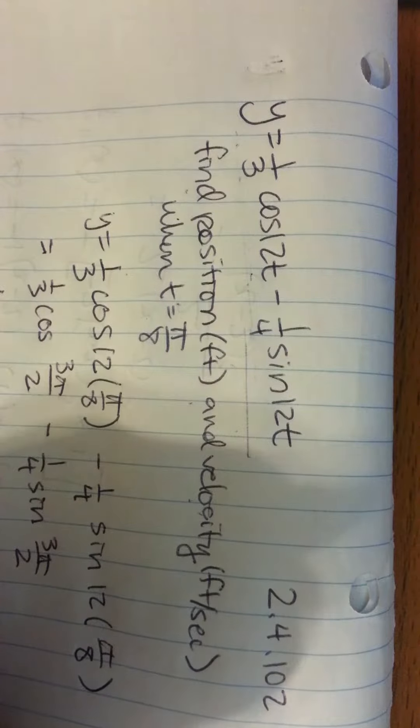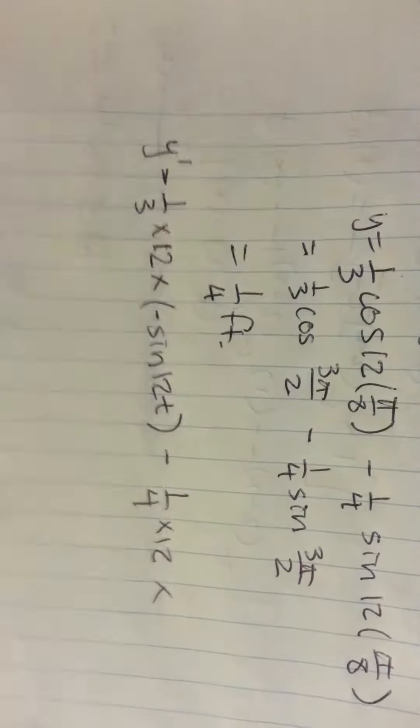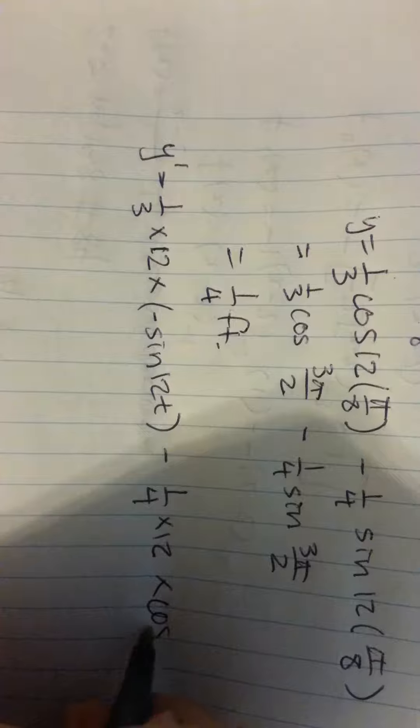the derivative of the outside function, which is cosine of 12t.